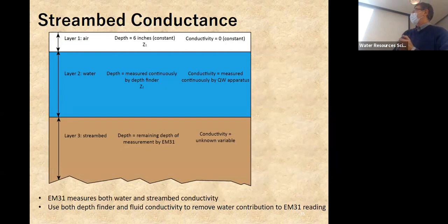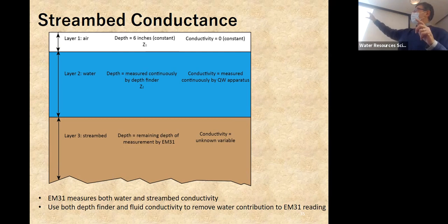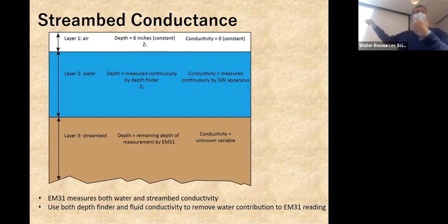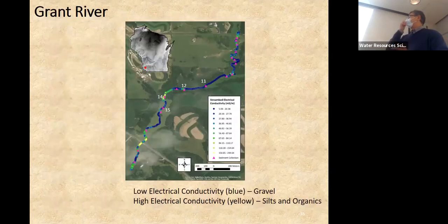The EM31 has a transmitter at one end and a receiver at the other. Held normally it senses down to about 6 meters; rotated 90 degrees it senses to about 3 meters — that horizontal orientation is what we had in the canoe. We have one layer of air, one layer of water, and the stream bed we care about. Because we measured fluid conductivity with the Arduino, know air conductivity is near zero, and had a depth finder, we could strip out those contributions using the McNeil Geonics Technical Note 6 equations, leaving just the stream bed conductivity.